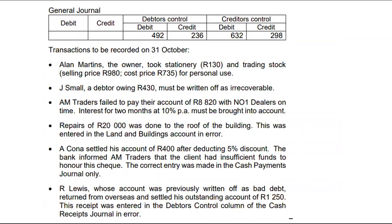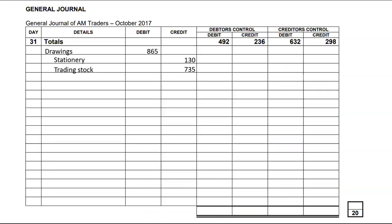Point two: J Small's debt of R430 must be written off as irrecoverable. That is bad debts. We simply debit bad debts and credit J Small by R430. Note that J Small is a debtor, so this will affect debtors control. We record that R430 on the credit side of debtors control, as it will reduce our debtors control.